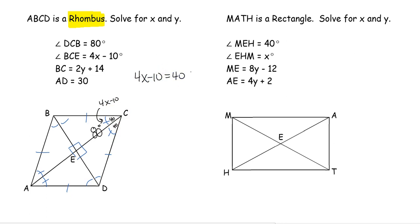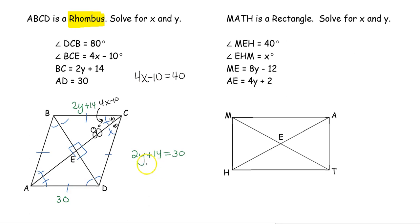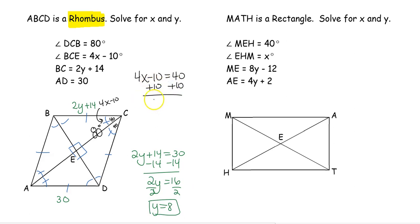We also have segment BC equals 2y plus 14 and segment AD equals 30. Using the property that all four sides are congruent, opposite sides are congruent, so 2y plus 14 equals 30. Solving: 2y equals 16, so y equals 8. For x: adding 10 to both sides gives 4x equals 50, so x equals 12.5.